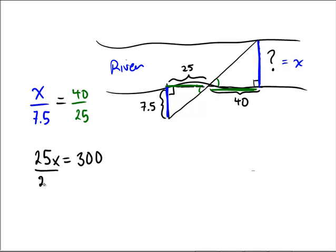Divide by 25, and when we divide by 25, we see that, let's see, 25 goes into 10 four times, so it'll go into 300 twelve times, so we're getting that x equals 12.